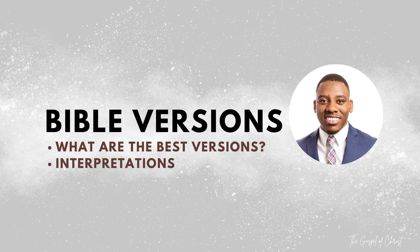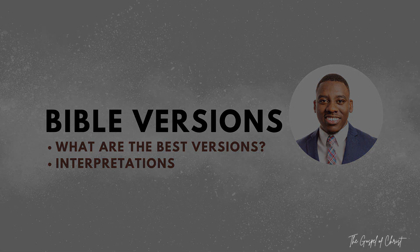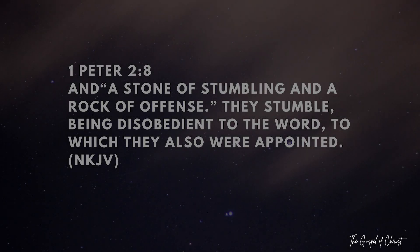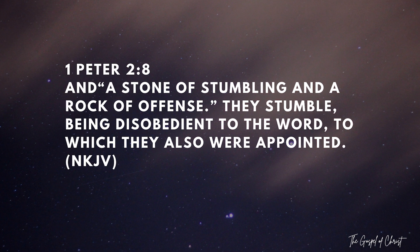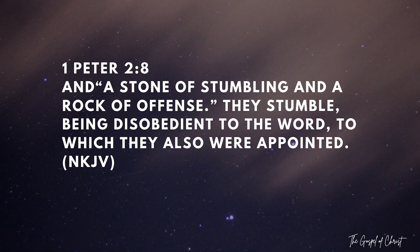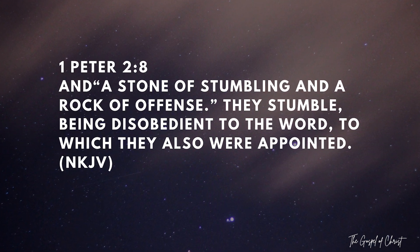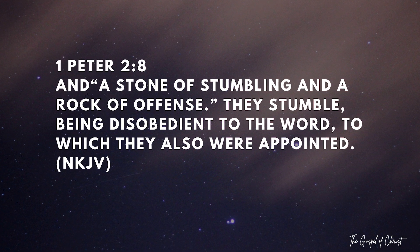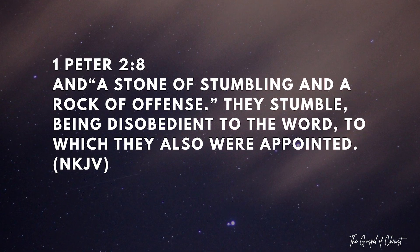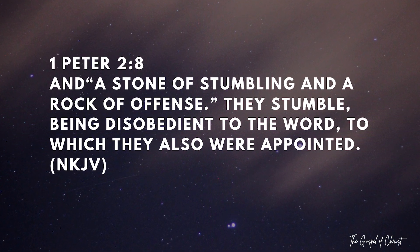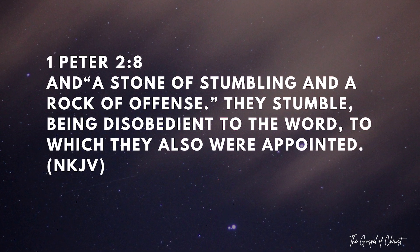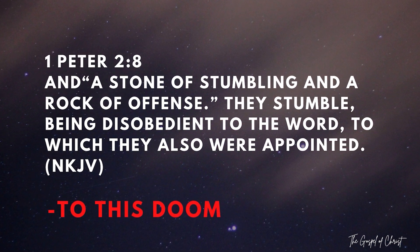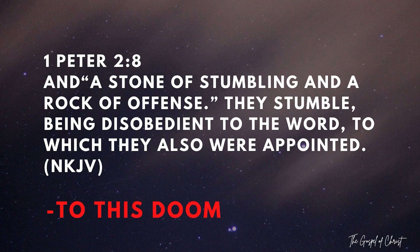That same verse from the NKJV — the New King James Version — reads as follows: 'And a stone of stumbling and a rock of offense. They stumble, being disobedient to the word, to which they were also appointed.' As you can see, this version is missing the words 'to this doom,' and the meaning is almost completely reversed.